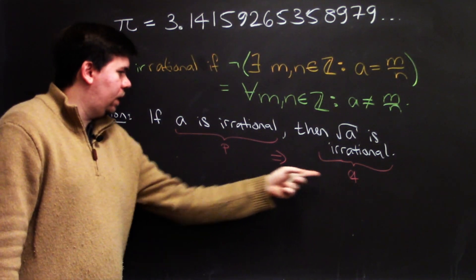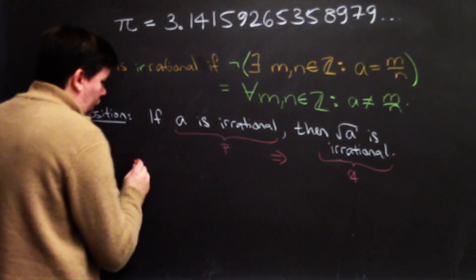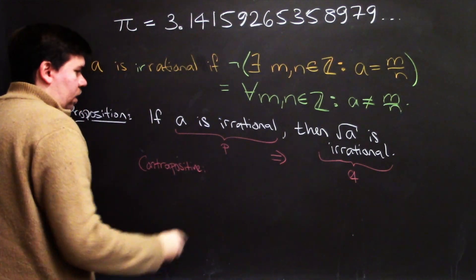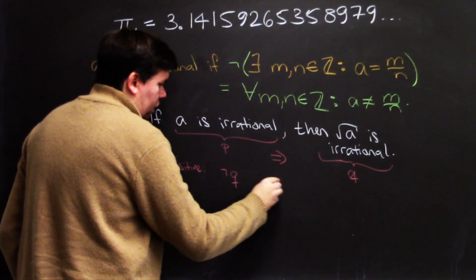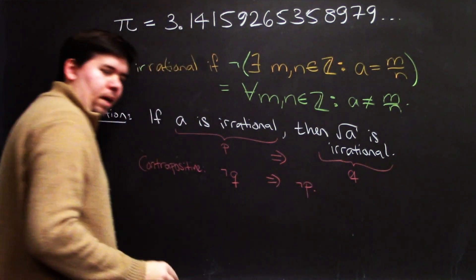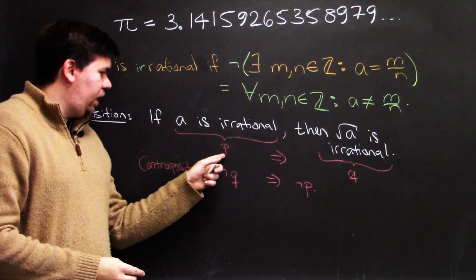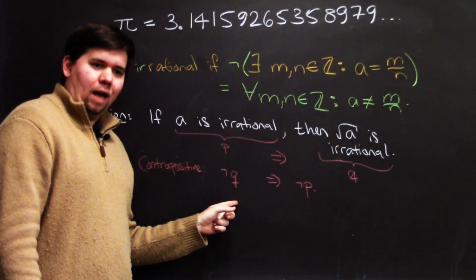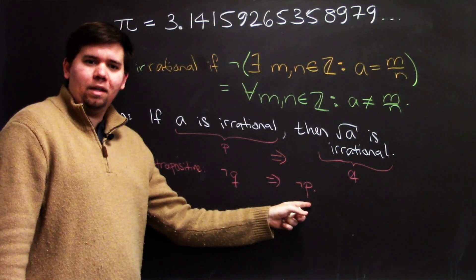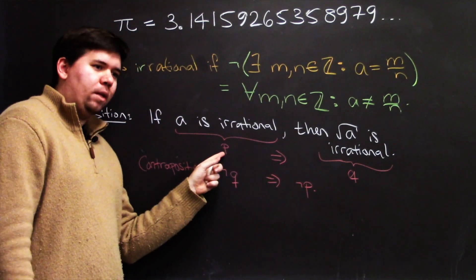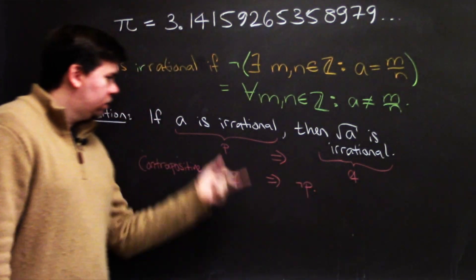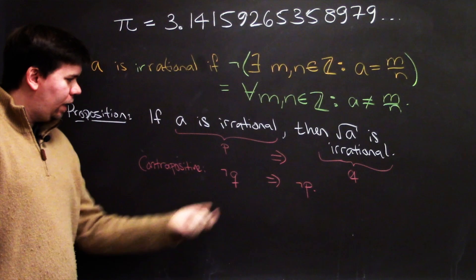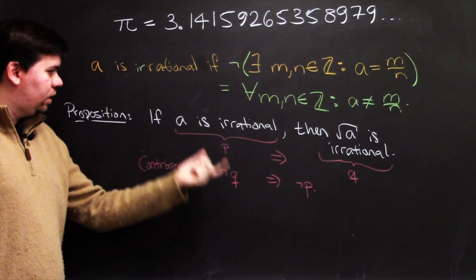you might remember that the statement p implies q is equivalent to its contrapositive. The contrapositive being not q implies not p. So this is saying, if p is true, then q is true. What does that mean? That means that if q is not true, then it couldn't have been the case that p is true. Why not? Because if p had been true, then q would have had to be true. So, the statement p implies q is equivalent to the statement not q implies not p. And you can see this with truth tables or however you want to convince yourself that these two are equivalent statements.